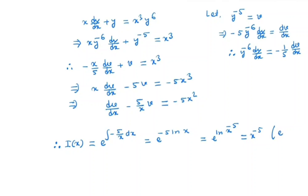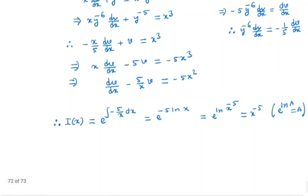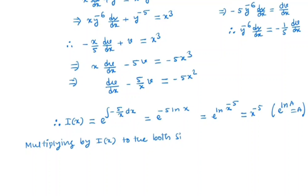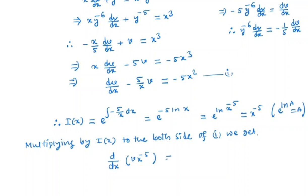This uses the formula e to the power ln a equals a. So multiplying both sides of the equation by the integrating factor I(x) equals x to the power minus 5, the right hand side becomes minus 5 x to the power minus 3.